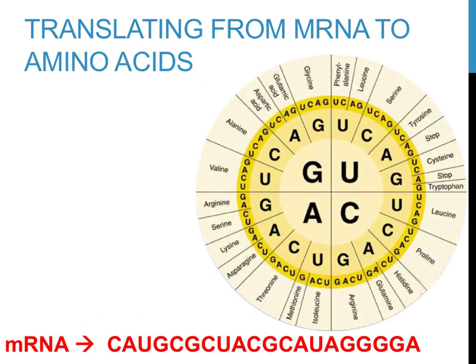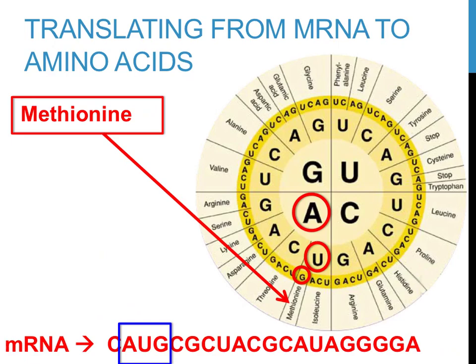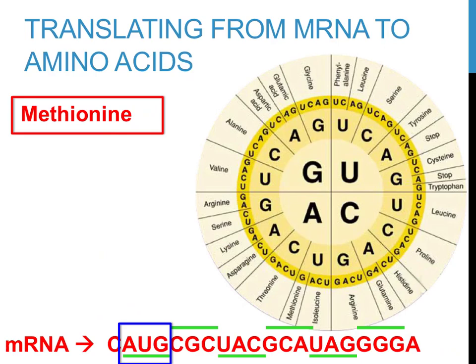Let's tie together everything we've discussed regarding translation. The first step, given an mRNA sequence, is to find the start codon. The start codon is always AUG in humans, which codes for methionine — the first amino acid of every protein. The start codon doesn't have to be the first three letters; you're just looking for the first occurrence of AUG in order. I have underlined it in our sequence. It's important to separate letters by three after you have found the start codon, and not before.